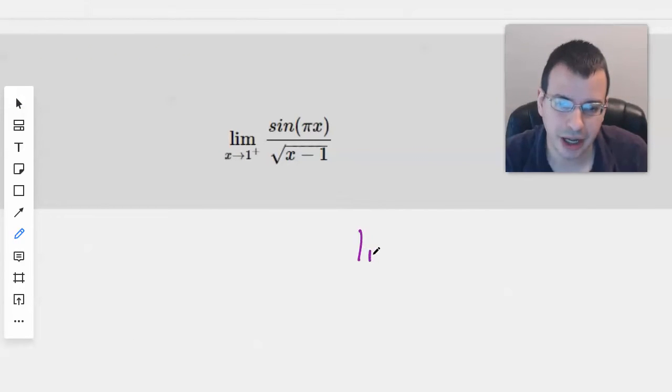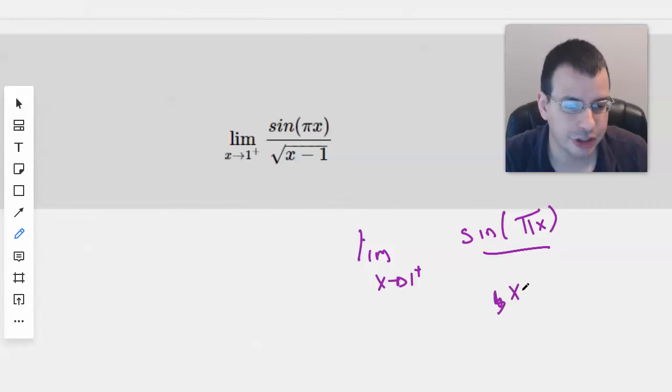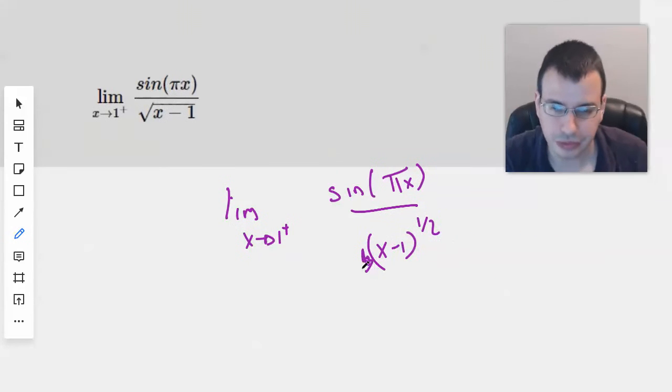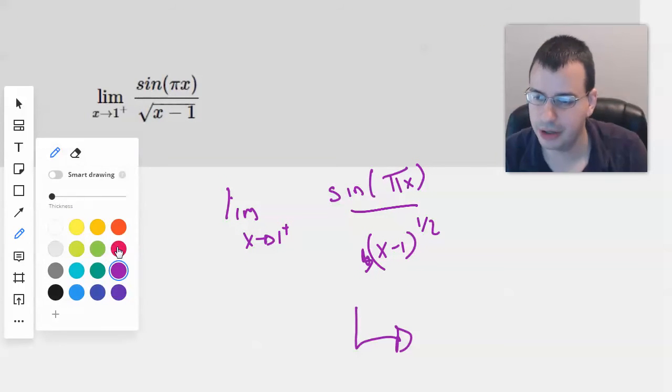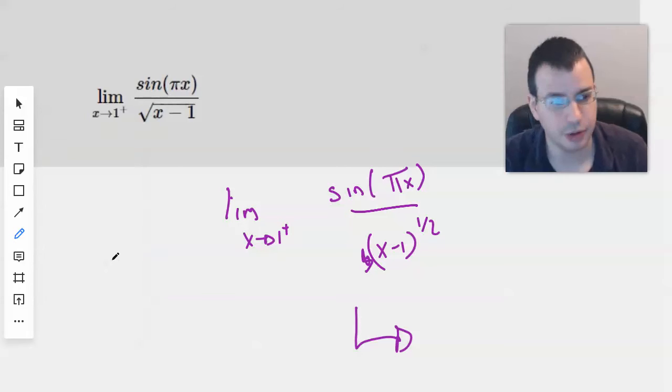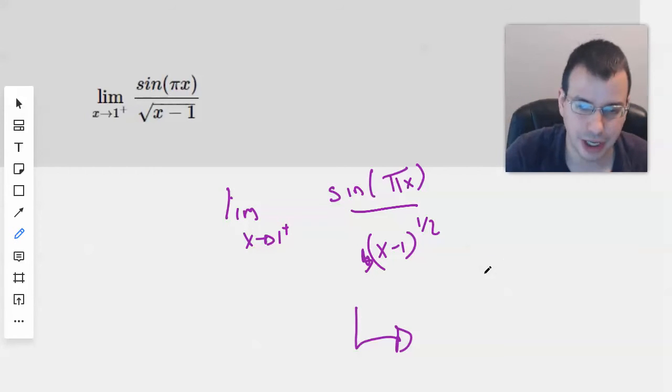So I'll start by writing it out again. 1 plus sine of pi x. And then I'll call this x minus 1 to the 1 half. Okay. And I'll draw an arrow because that way I'm ambiguous about the relationship. But what I'm going to do is I'm going to take the derivative of the top and the derivative of the bottom.